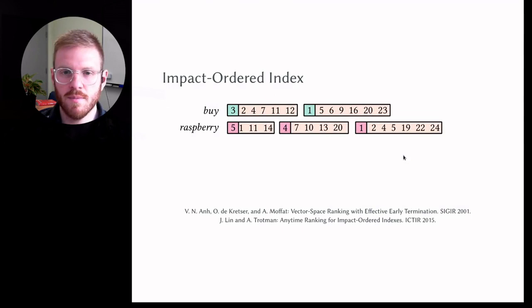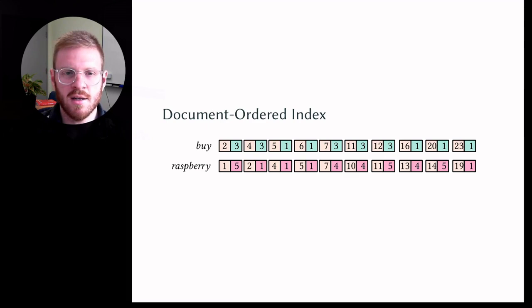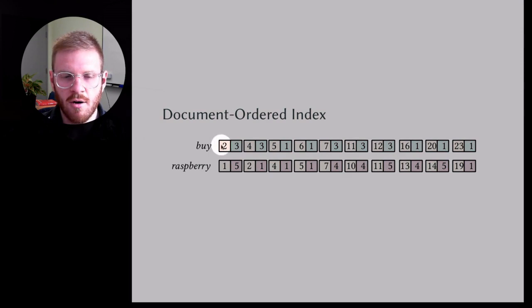The more commonly used approach for inverted indexing is the document audit index. In the document audit index, we have pairs of document ID and payload or impact, or it could be a term frequency. We store these pairs, and these pairs are stored monotonically increasing on the document identifier. So we have document 2, document 4, 5, 6, 7, 11, 12, and so on.